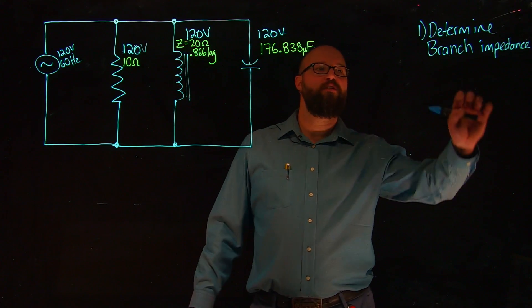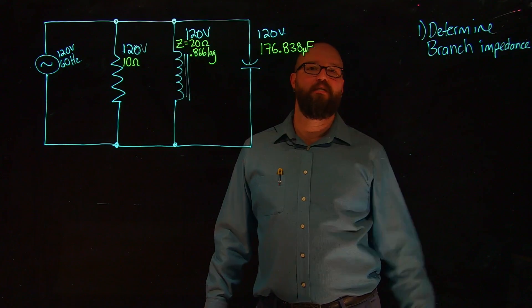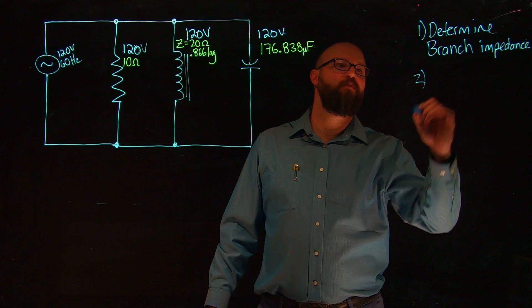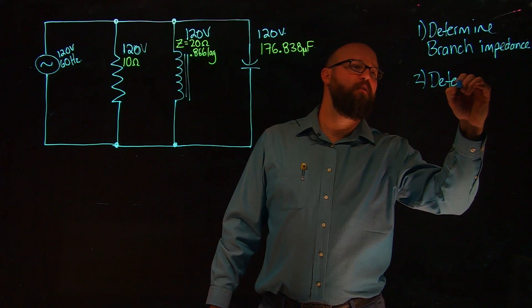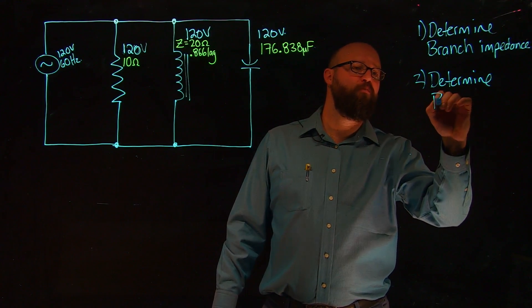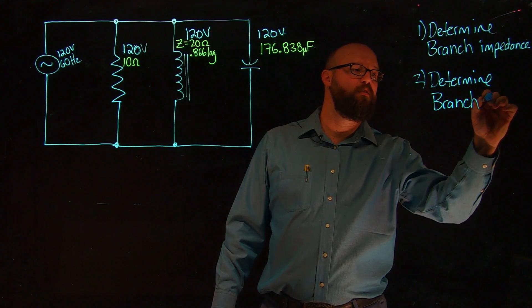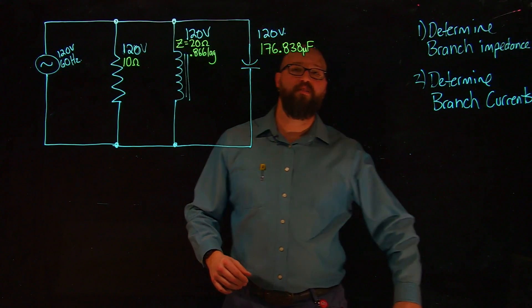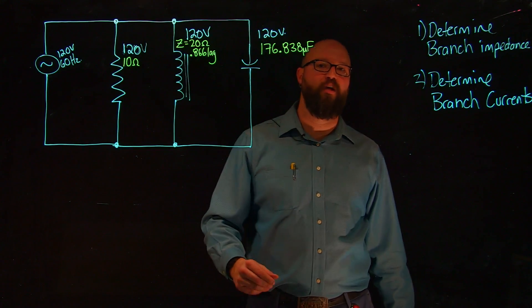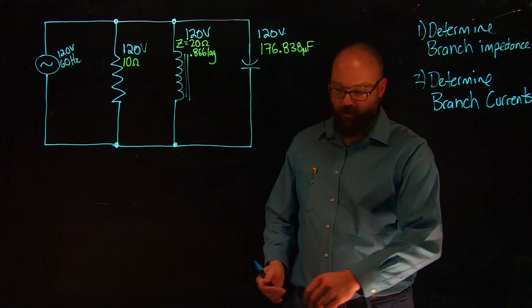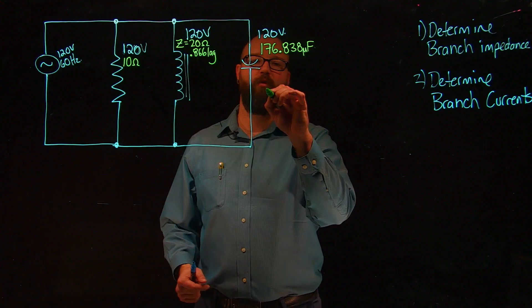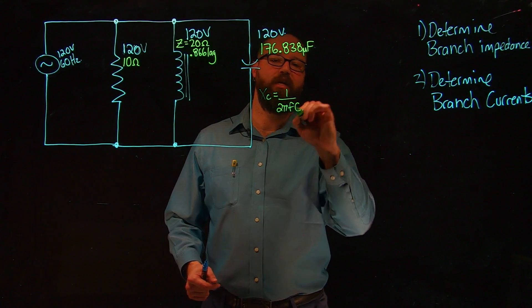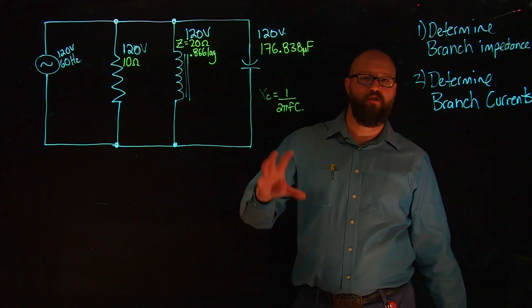We need to know the branch impedance of each one of these in order to determine the second step. The second step is going to be to determine individual branch currents. But before we can do that, we've got this capacitive value that I need to convert into an ohmic value of capacitive reactance. So we're going to take our capacitive reactance formula: Xc is equal to 1 over 2πfc, and we're going to turn it into an ohmic value.